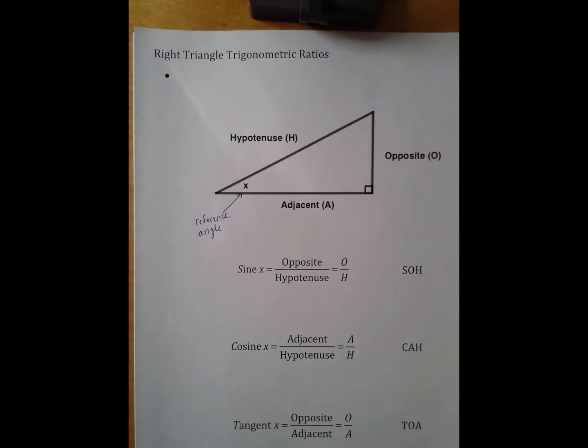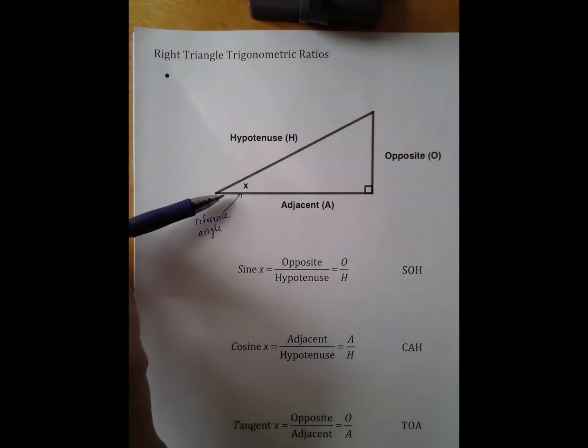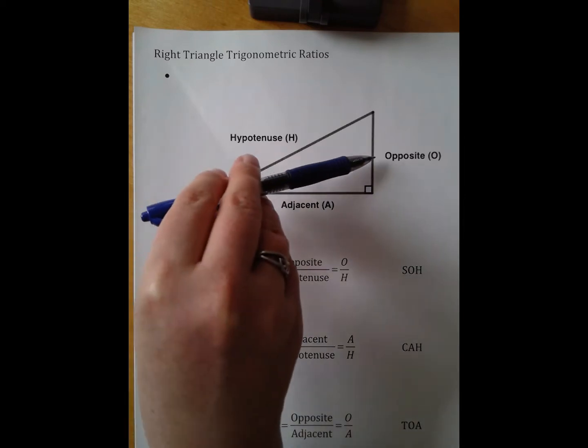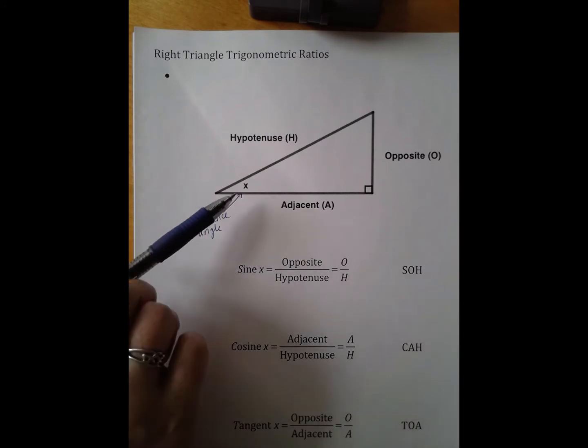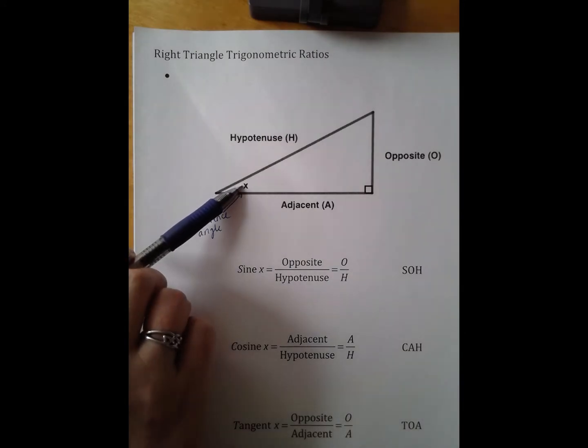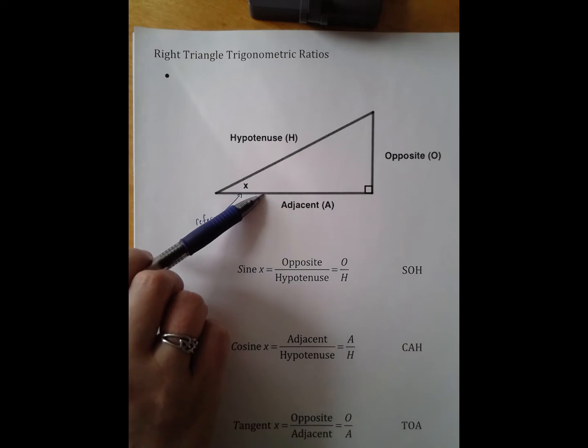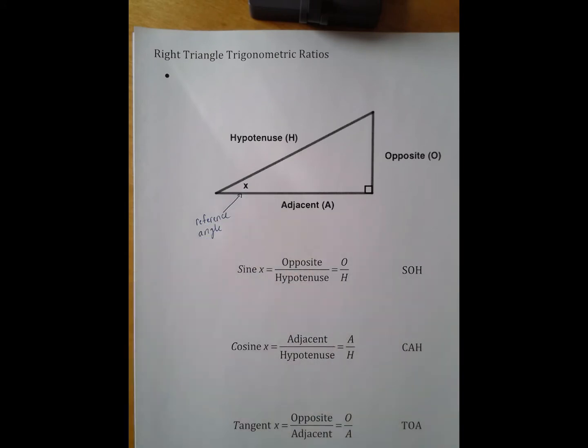But the opposite and the adjacent does require us to say where we're sitting. So if I'm sitting here and I'm looking across, that's where my opposite side will be, and we use the letter O. And from my reference angle, the side that's right next to me or adjacent is right here. I use the letter A.